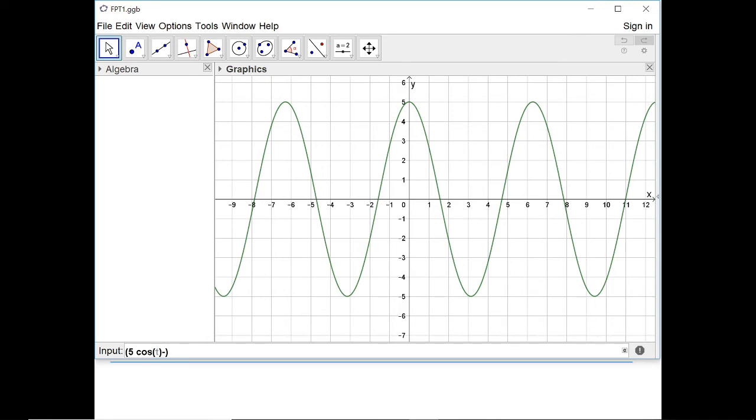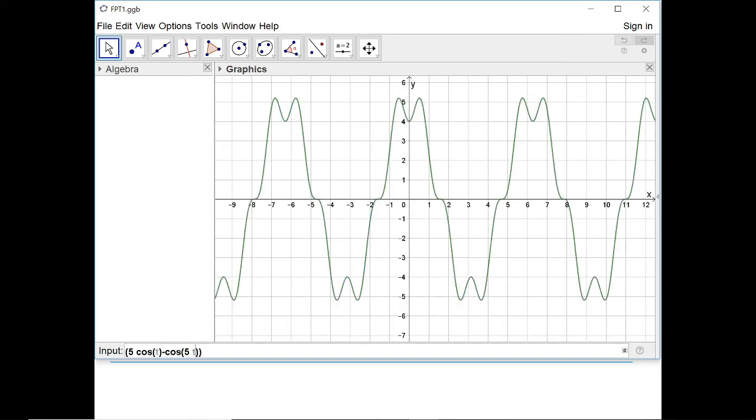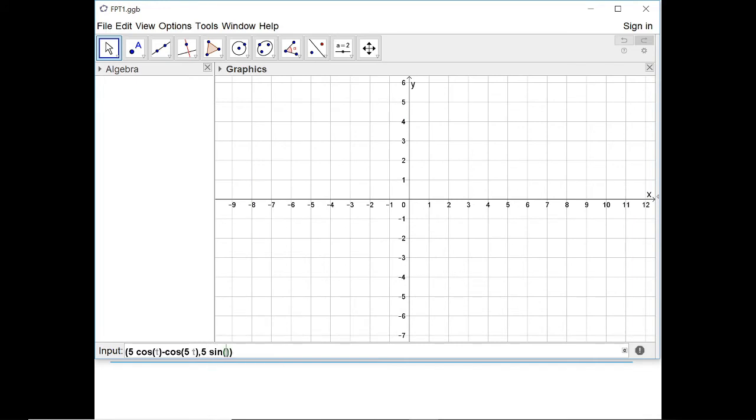minus cos of 5 times t, and then y is 5 sine of t